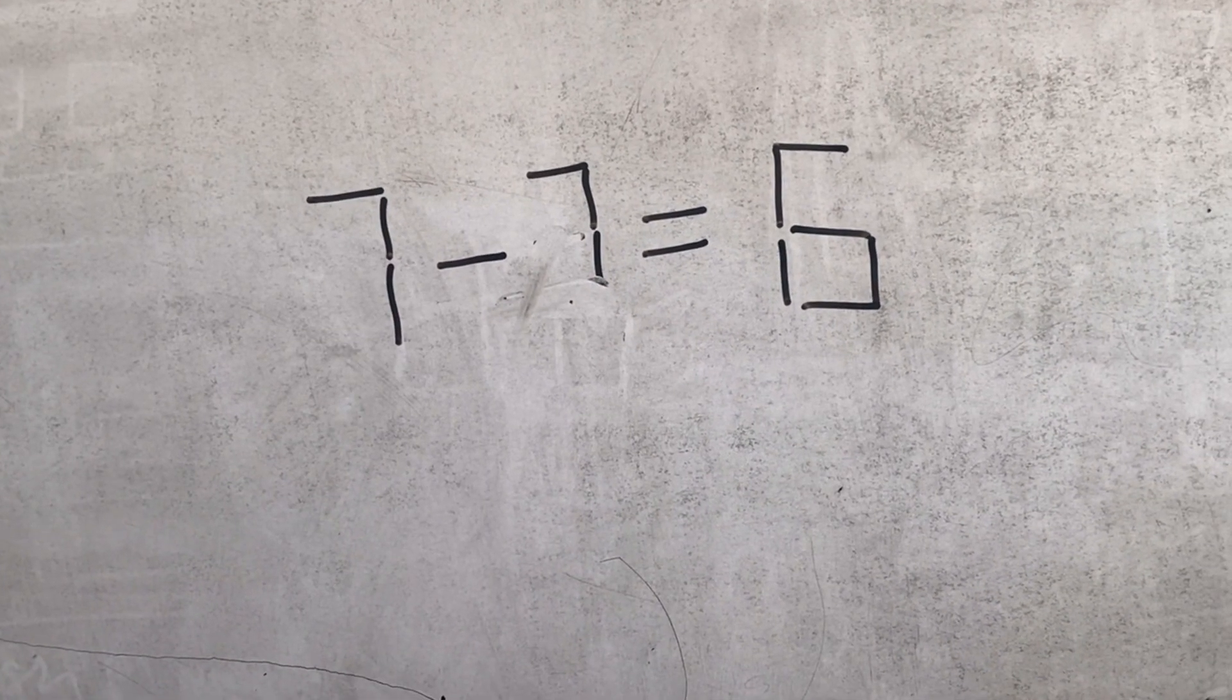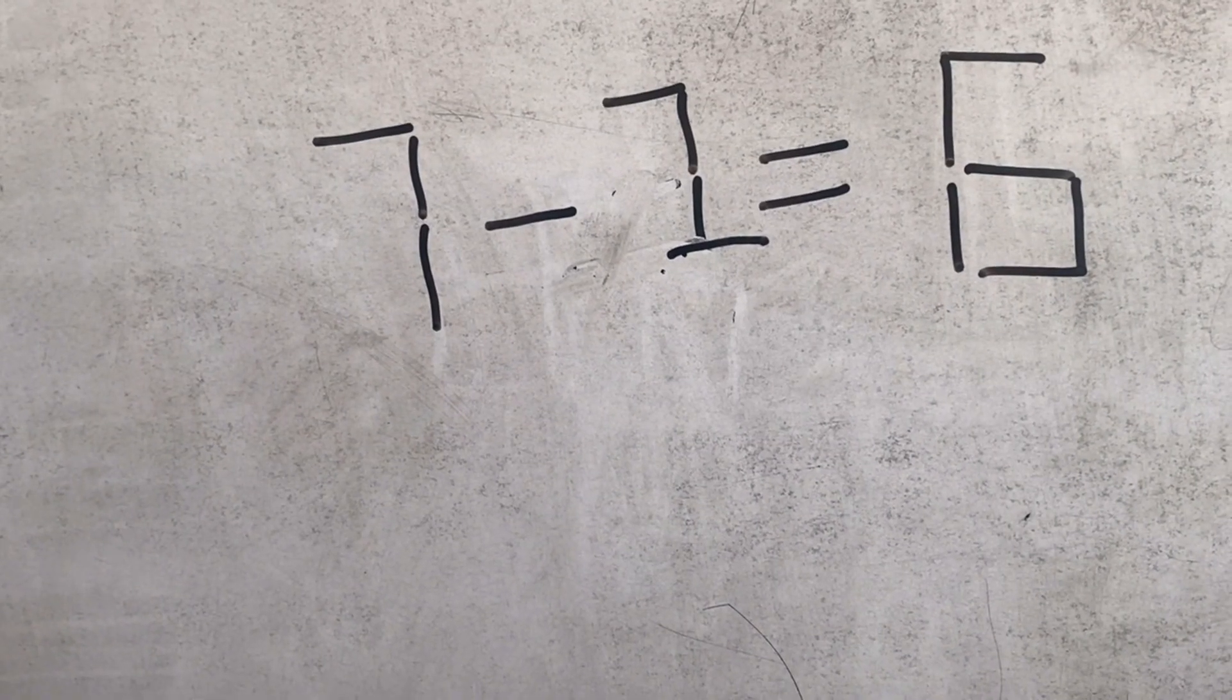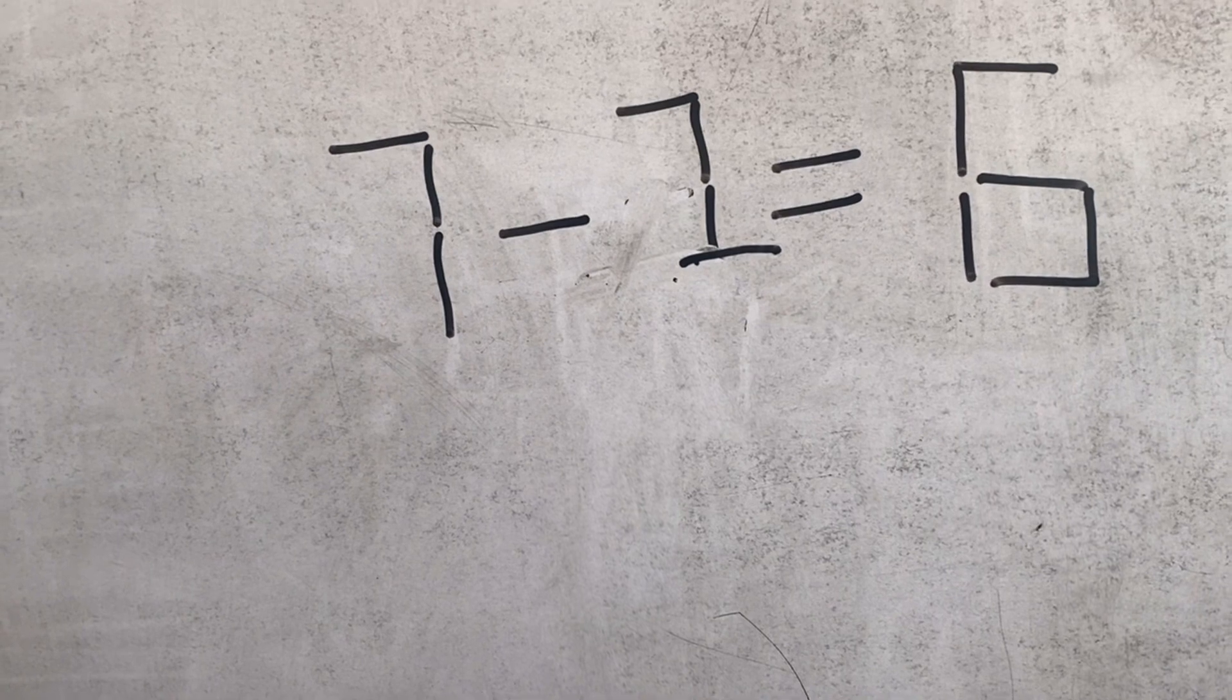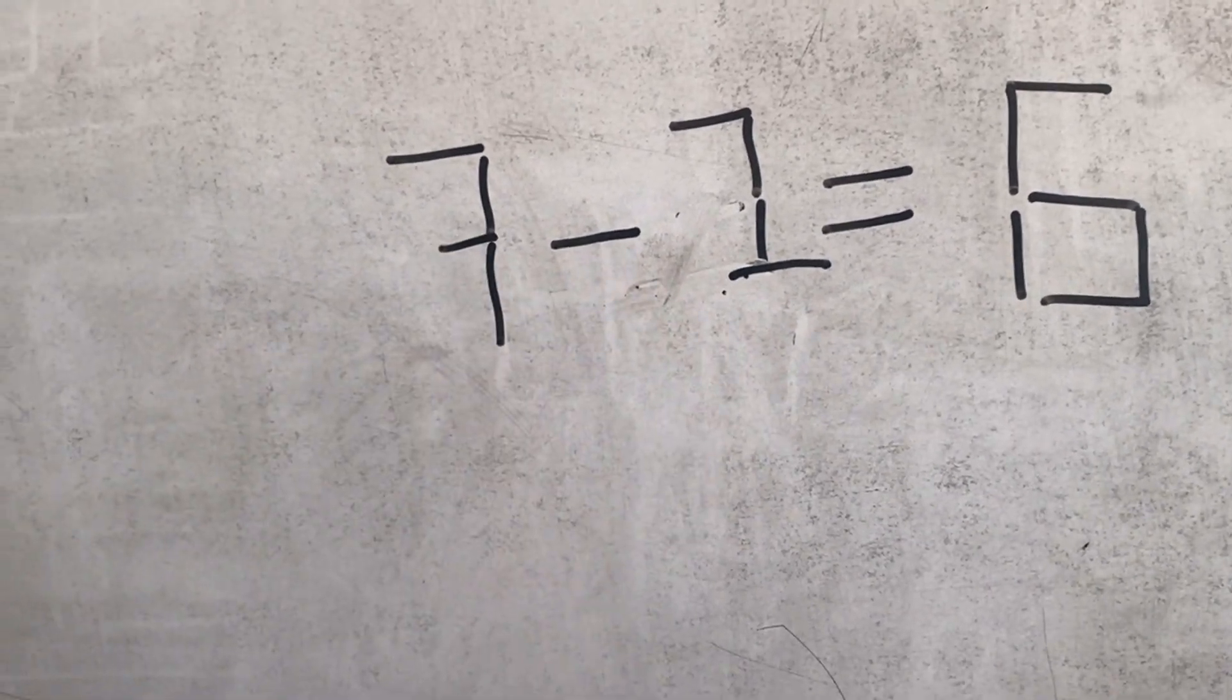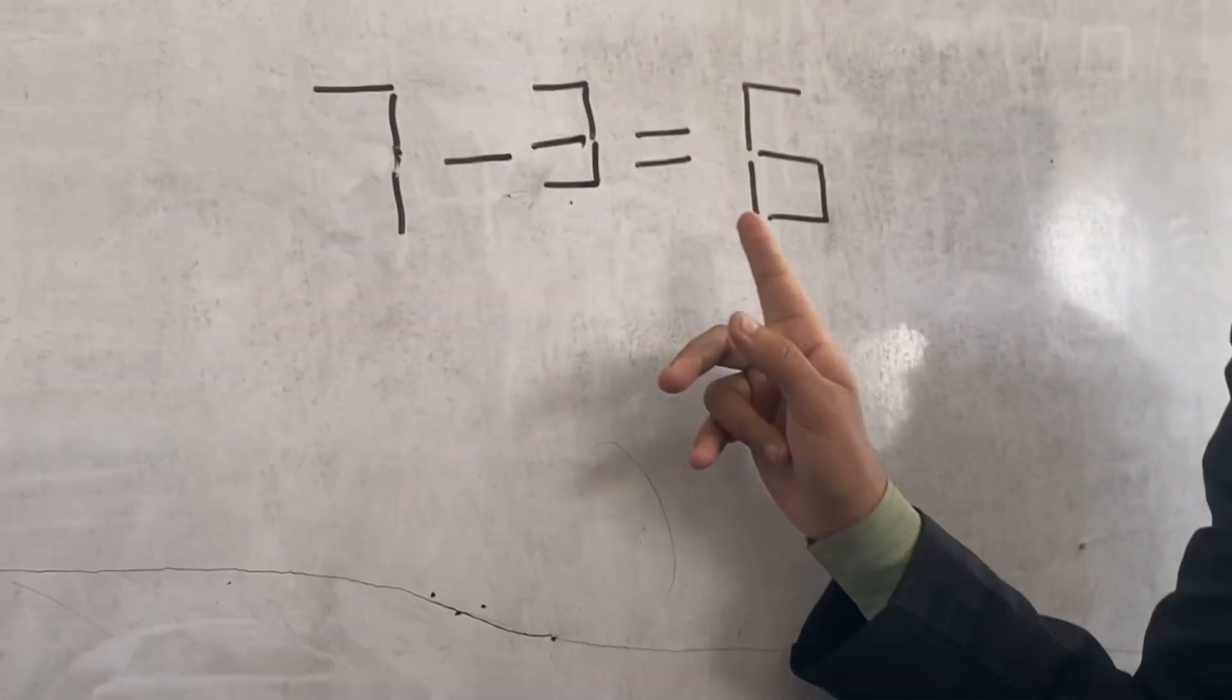7 minus 7 is 6. This one stick. Where is one stick? No. Okay, it's equal to 6. How to solve?